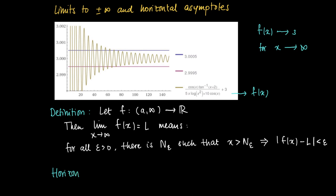In case we have such an L for a function f as x goes to infinity, we will call the line y = L the horizontal asymptote for f as x goes to infinity.